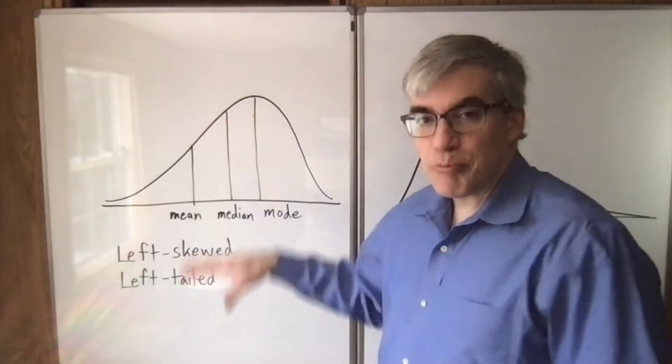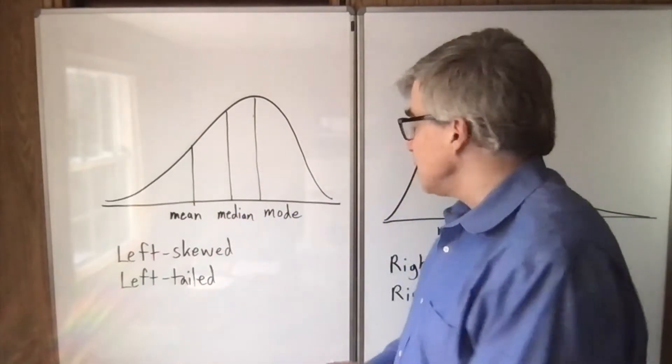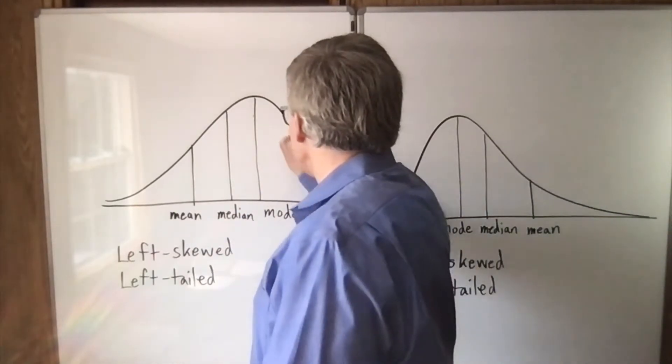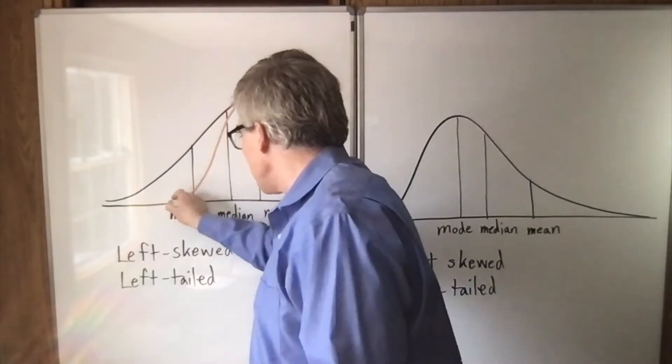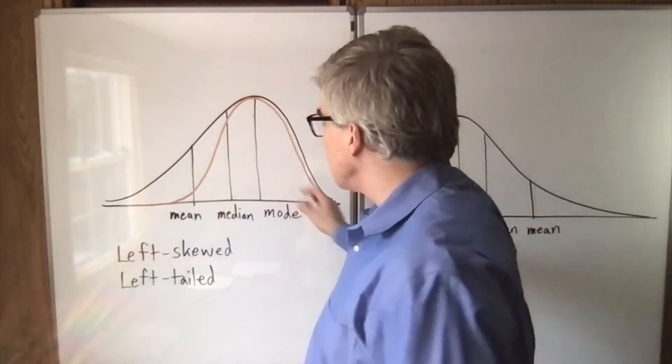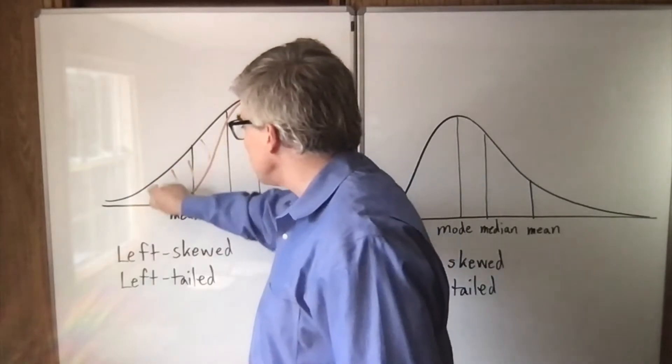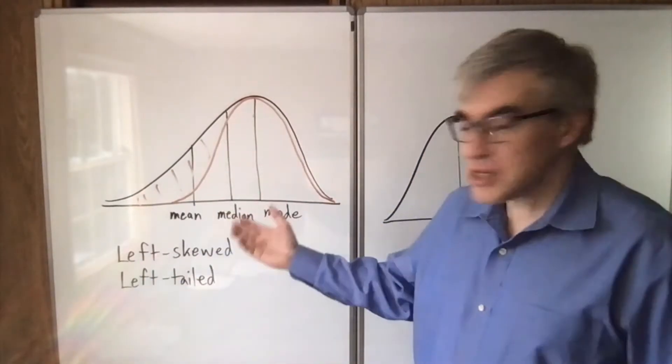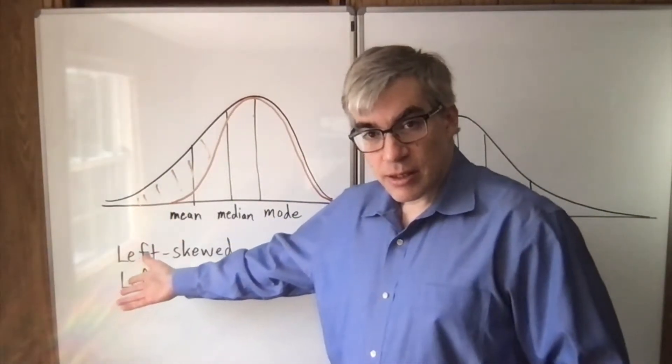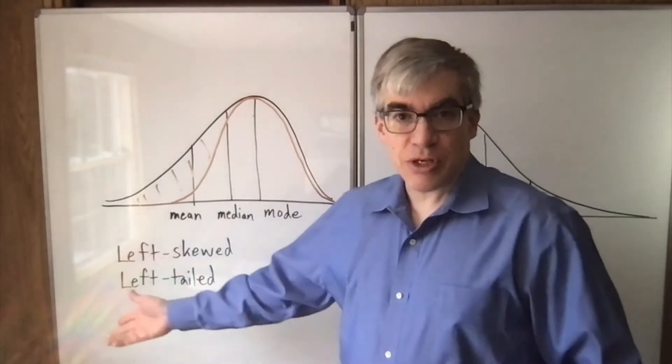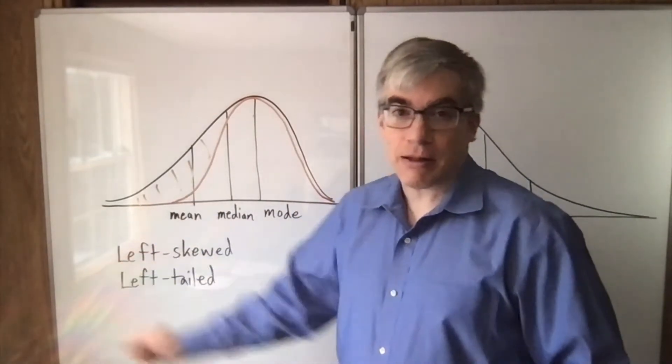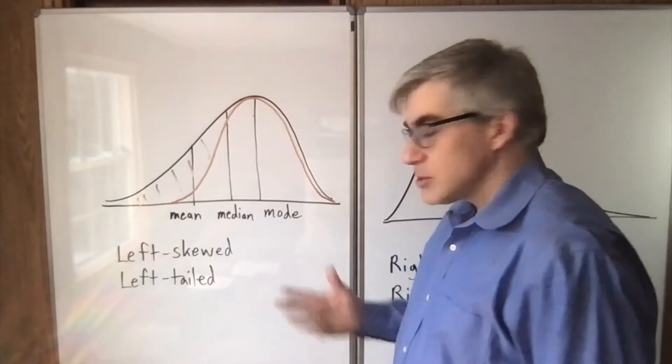If you imagine a bell curve being tucked inside this, it would look something like this, and then to make the distribution we're talking about you would be padding it out. You'd be adding material on the left, and so that makes it left skewed, or it has a long left tail. So that's one way to remember it.